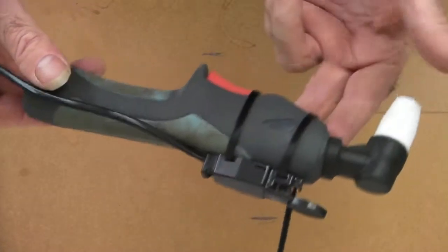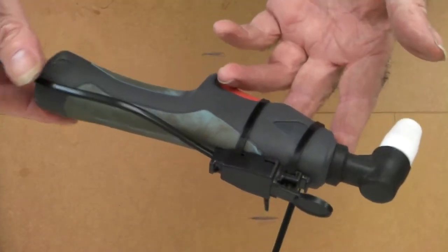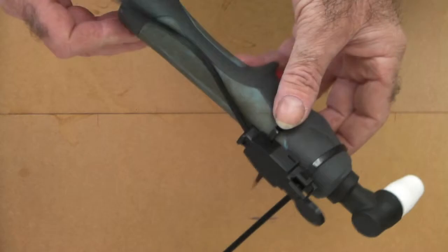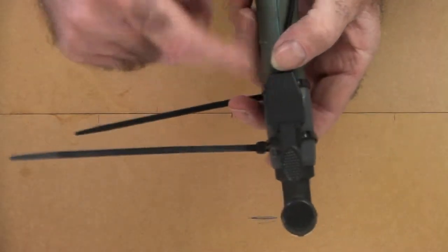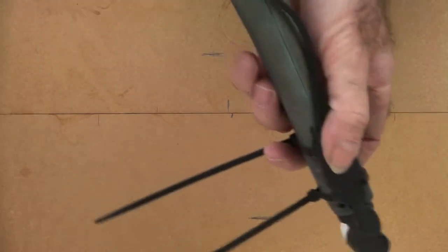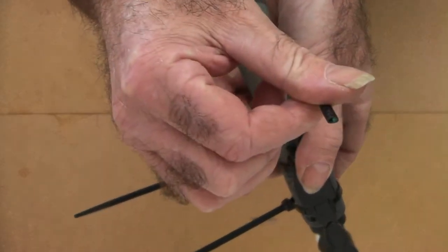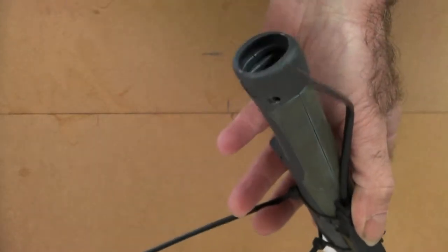So instead of buying a torch, 30 bucks for a torch or a hundred bucks for a torch and a lead, just buy the switches. I think you get five of those switches for about seven dollars. Brilliant.